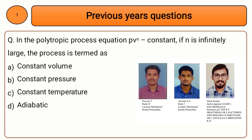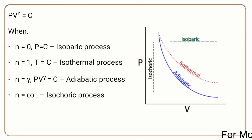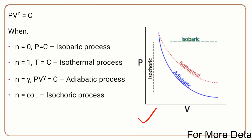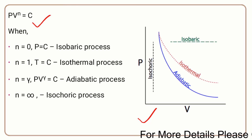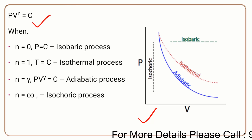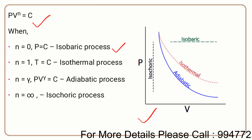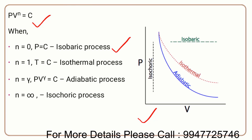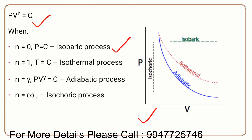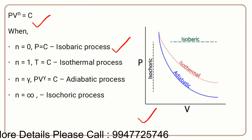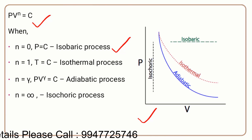In the polytropic equation PV raised to n is equal to constant, we consider different values of n. If n is equal to 0, then PV raised to 0 is a constant, which means P is equal to constant — that is the isobaric process.